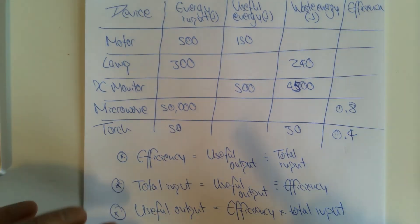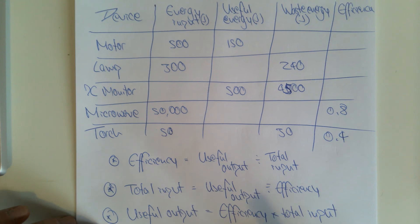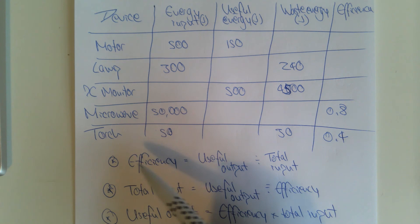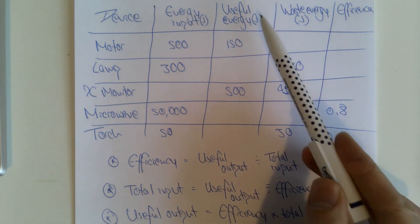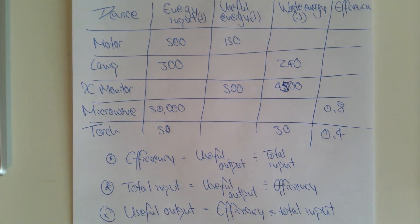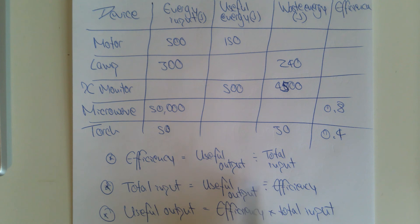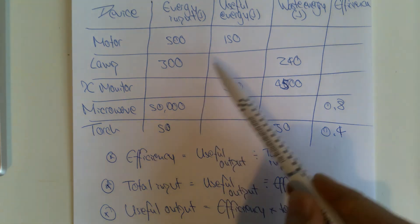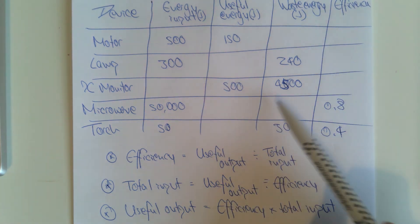On screen is a table showing different devices with their input energy, useful energy, wasted energy, and efficiency. The three rearrangements of the equation are also shown below. Please pause the video, write out the table and equations, and fill in the gaps. Once done, unpause to mark your answers.